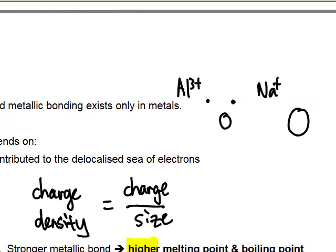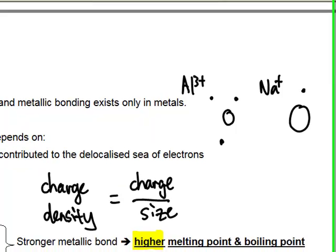So sodium will only have one electron but aluminum will have three electrons on average around the cation. Because it's a mobile sea of electrons they are free to move, so sometimes there might be more electrons, sometimes there might be less, but on average it's around three for aluminum and around one for sodium.